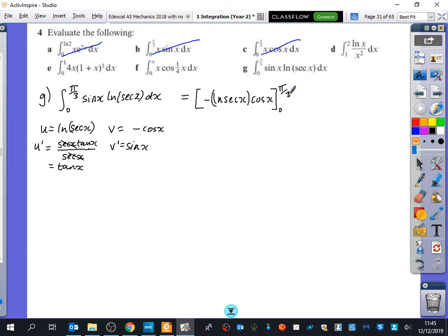Then what I've got is the integral of these two things that I've got here. So I'm going to, it's going to be minus the integral of minus cos x tan x.